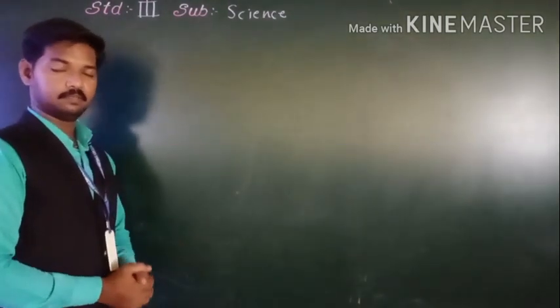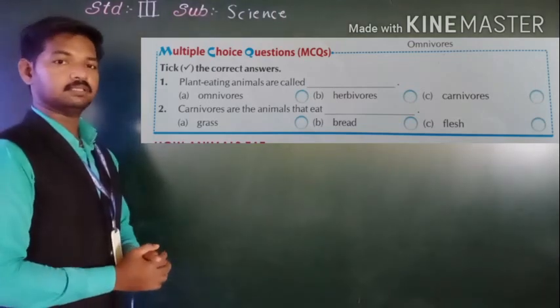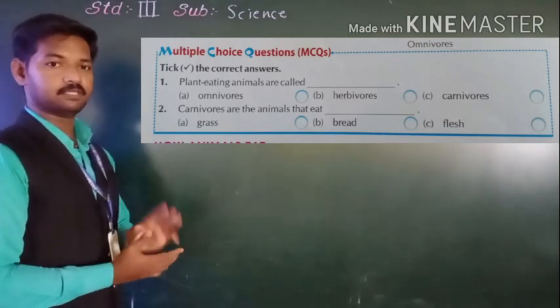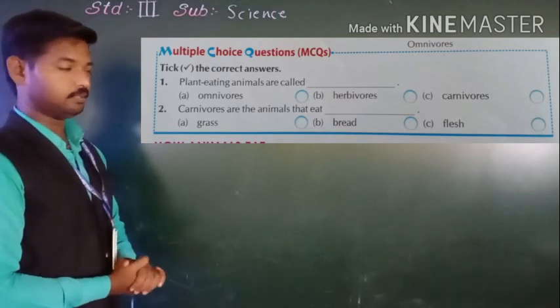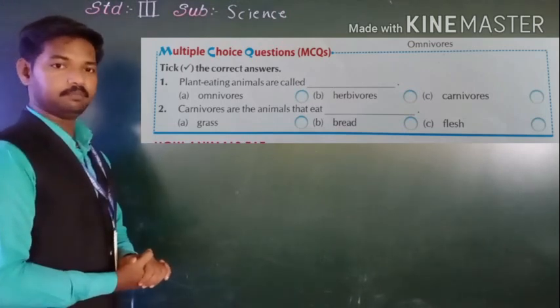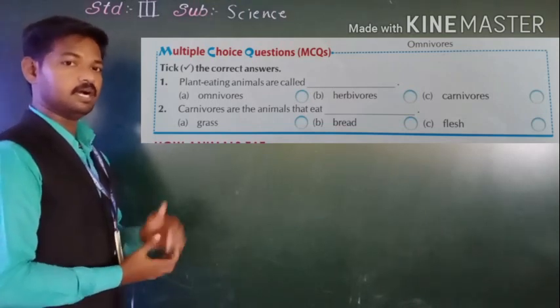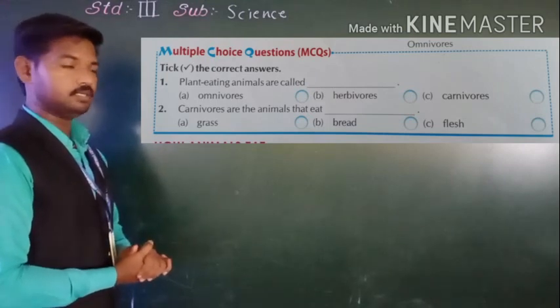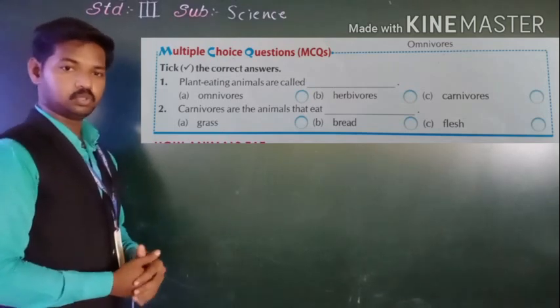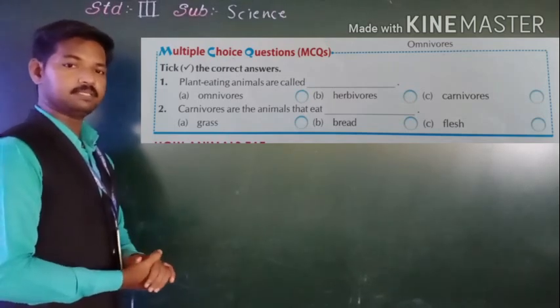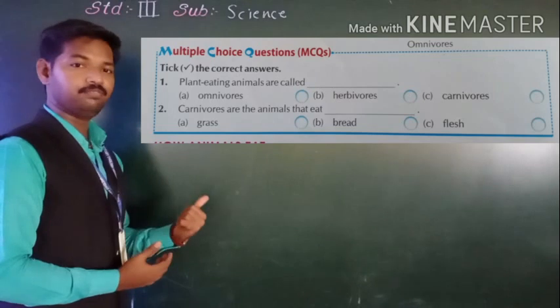Now on page number six, multiple choice questions are given there. For that given question you have to tick the correct option. There are three options given there. From that correct option you have to choose. For number one, plant eating animals are called, correct, herbivores. So you have to tick herbivores. Number two, carnivores are the animals that eat. Correct, answer is flesh.